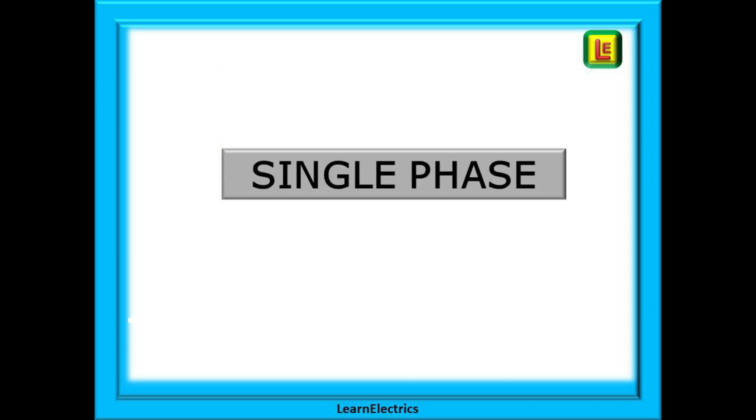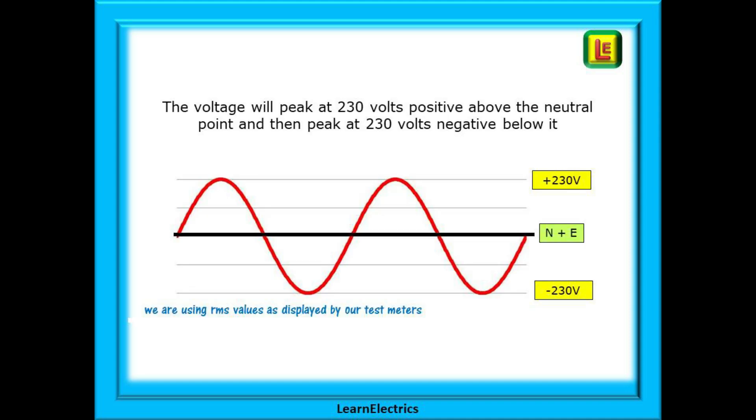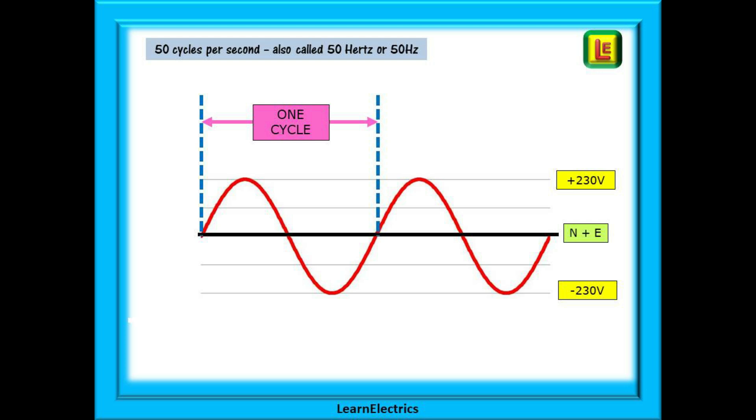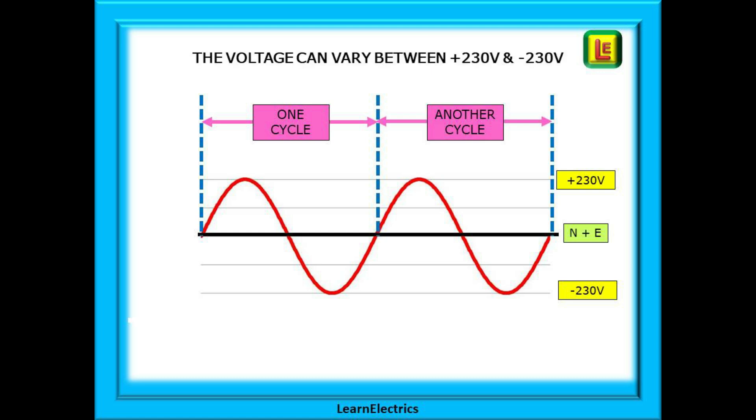If we have a quick recap on single phase, this will help our understanding of three-phase. In a single phase waveform, the voltage will peak at 230 volts positive above the neutral point and then peak at 230 volts negative below it. There are 50 cycles per second, often referred to as 50 hertz. One cycle of single phase is 20 thousandths of a second and so it goes on cycle after cycle. The voltage will vary between plus 230 volts and minus 230 volts with a positive and negative peak in each full cycle.